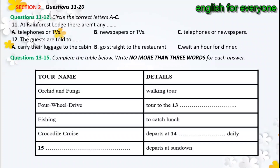Now turn to Section 2. Section 2. You will hear a recreation officer at a holiday resort telling the guests about their accommodation and the activities available. First, you have some time to look at questions 11 to 15. Now listen carefully to the first part of the talk and answer questions 11 to 15.